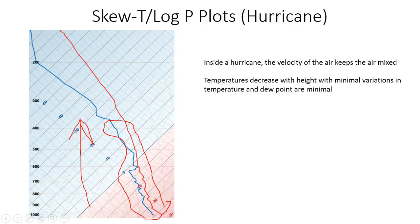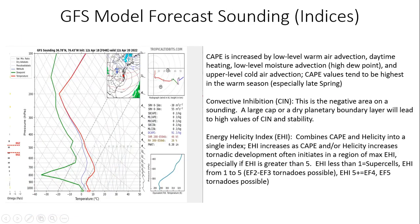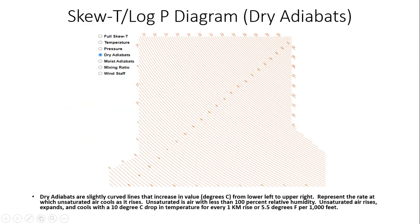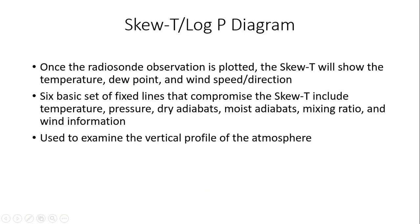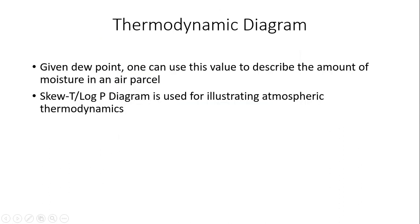That wraps up the training today on the Skew-T Log-P diagram. We gave you a few example soundings at the end of the training. We talked about this very important tool that meteorologists use — looking at the vertical profile of temperature, moisture, pressure, and wind speed and direction with height. It's a very useful tool whether we're looking at severe weather with thunderstorms and possible tornadoes, or wintertime rain versus snow forecasting scenarios.